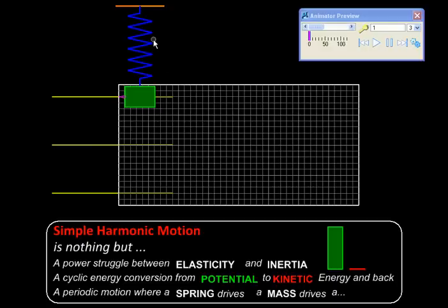Here we have a simple spring-mass system. This system has two important properties: elasticity, stored purely in the spring, and inertia, solely because of the mass. So the spring has no mass and the mass has no springiness or elasticity.